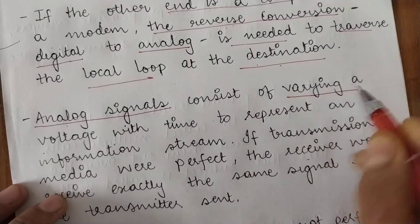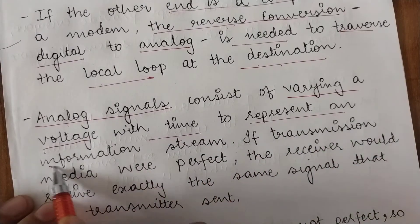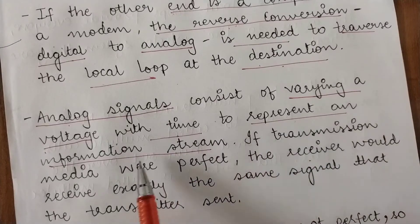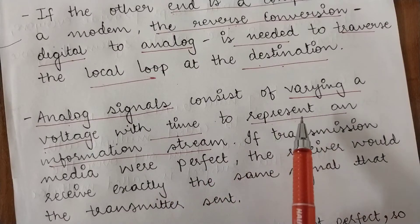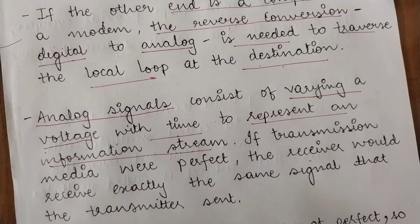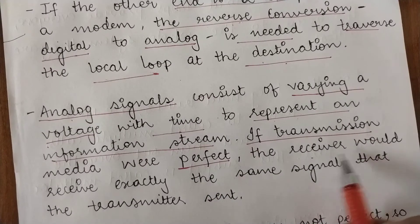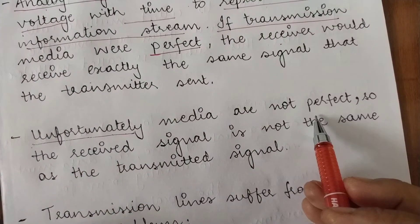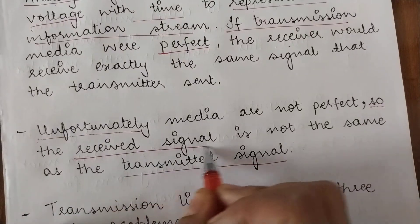Analog signals consist of varying a voltage with time to represent an information stream. If the transmission media were perfect, the receiver would receive exactly the same signal that the transmitter sent. But unfortunately, media are not perfect, so the received signal is not the same as the transmitted signal.